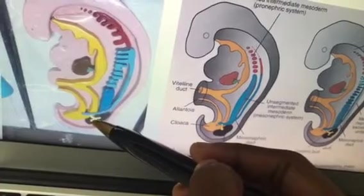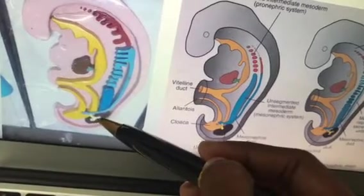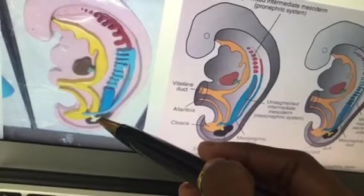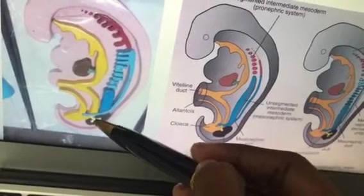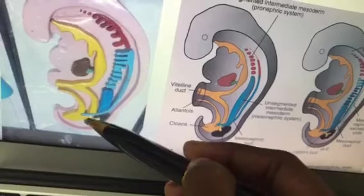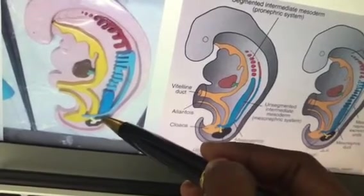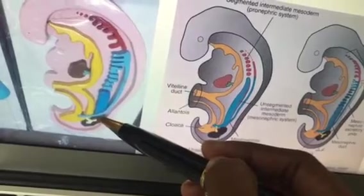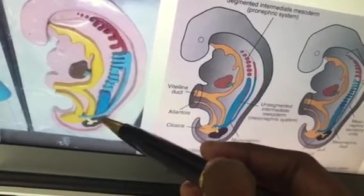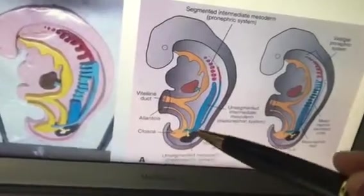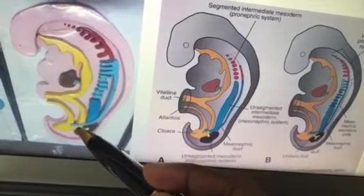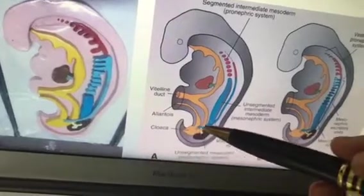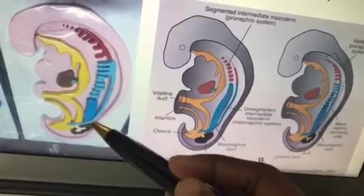The ureteric bud develops into the ureter, major calyces, minor calyces, and the collecting system. The excretory portion is formed from the metanephric blastema. So there are two systems: the excretory part from the metanephric blastema and the collecting part from the ureteric bud.